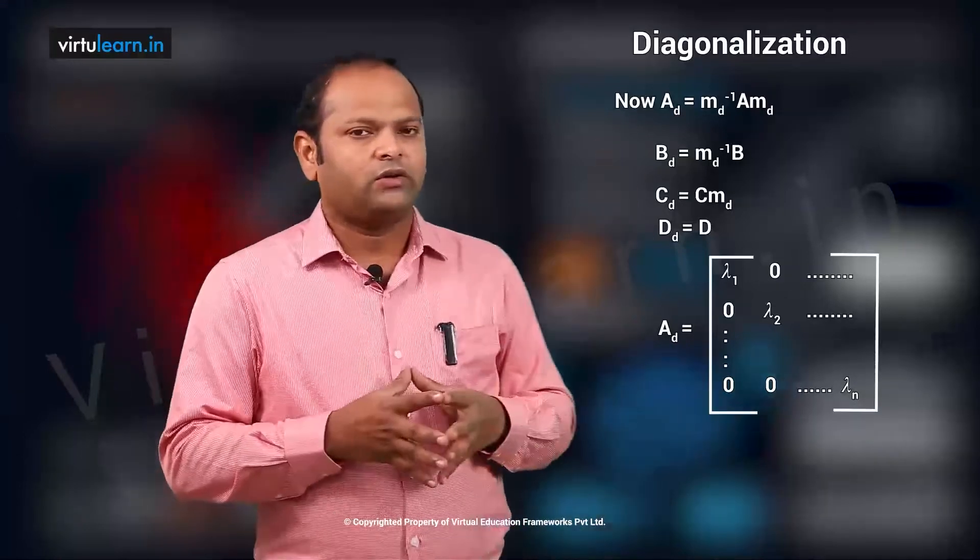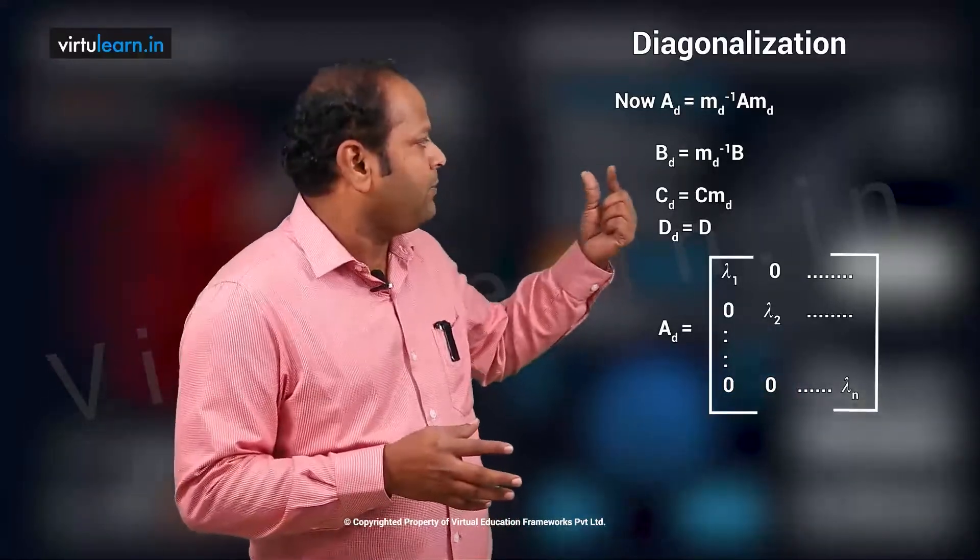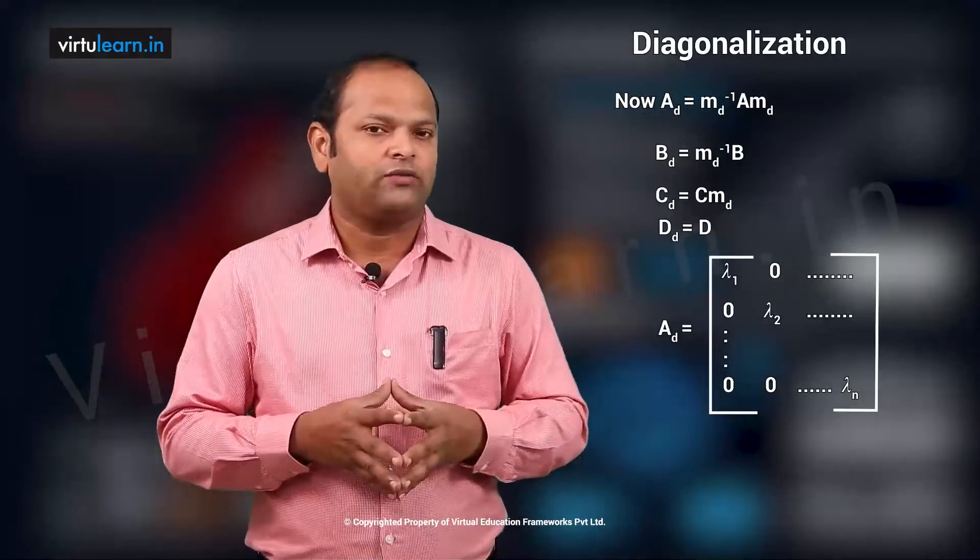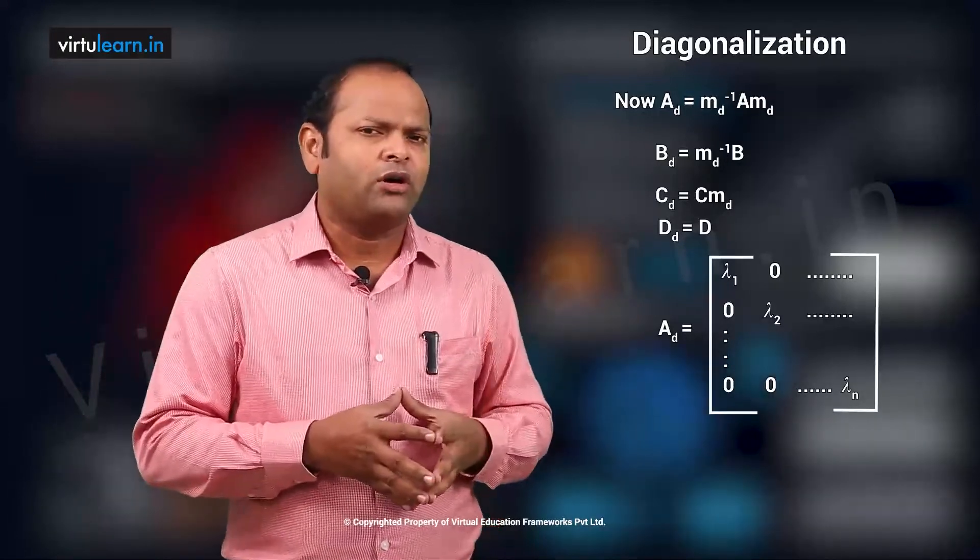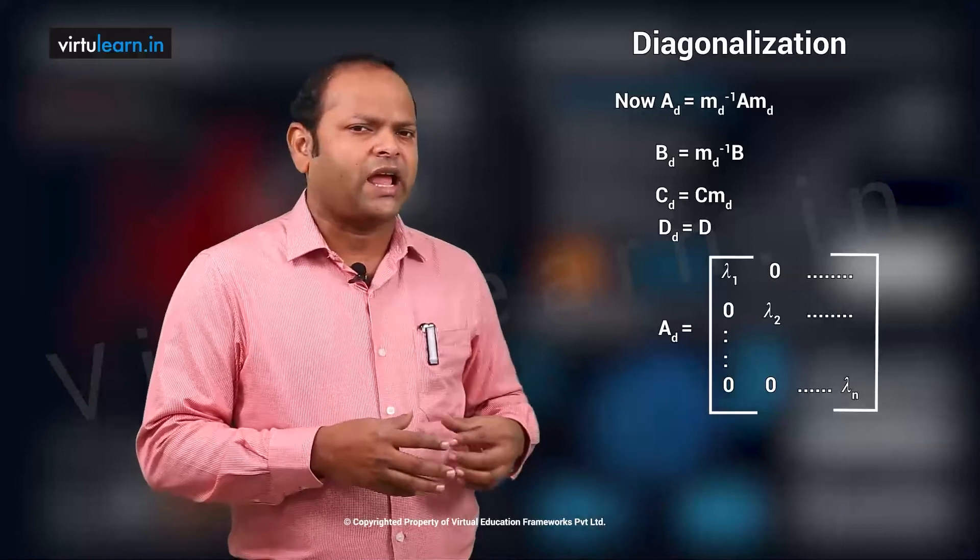So this way we can find out a_d, b_d, c_d and d_d, which is the modified model of the system. Then what would be the model of a_d? As we know it is a diagonal form.